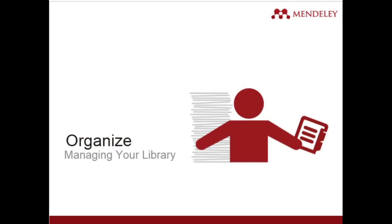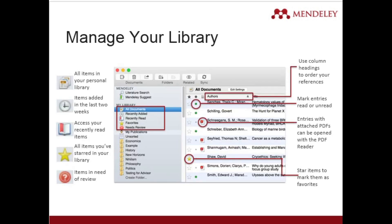To manage the library with Mendeley, all documents are categorized into four sections: Recently Added, Recently Read, Favorites, and Needs Review. You can organize your documents using these options, which helps you identify and fetch documents easily.